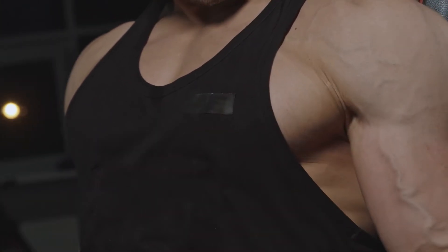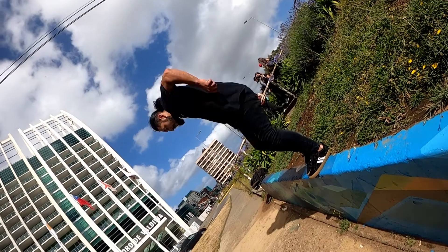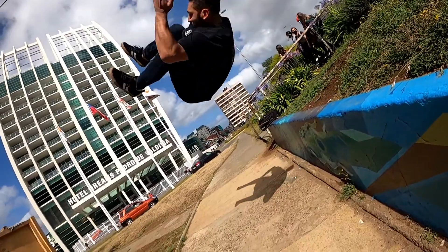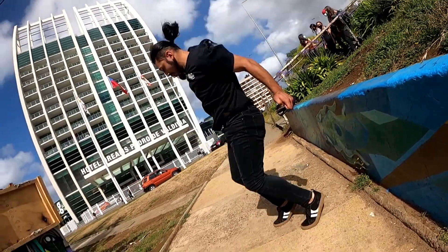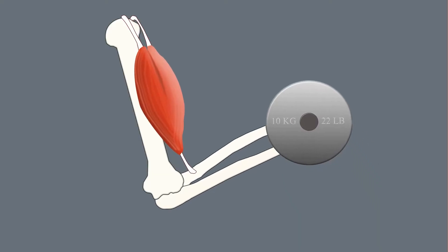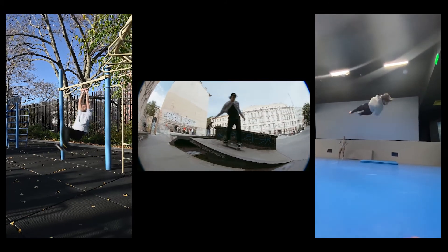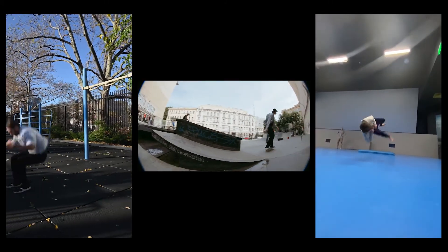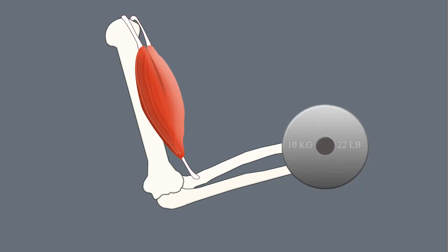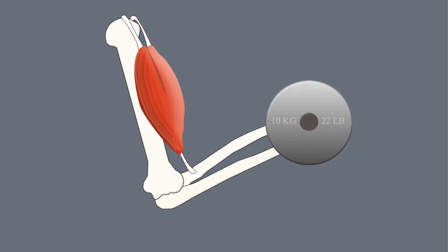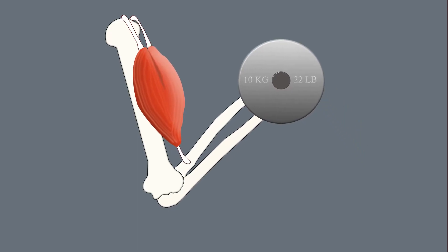Skeletal muscles. Without them you wouldn't be able to move around. Muscles provide the force that is needed to pull on your bones to allow for all of the body movements that we can do. They do this by contracting. When a muscle contracts it gets shorter and pulls on bones to create movements of the skeleton. But how do they contract? What's really going on? Let's find out.